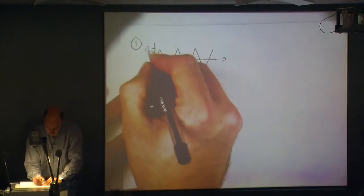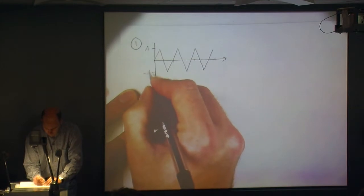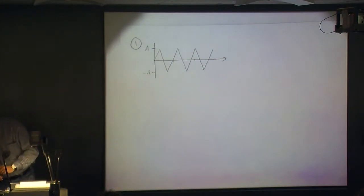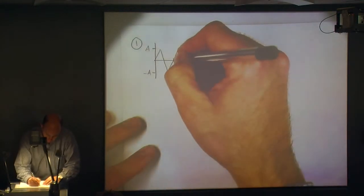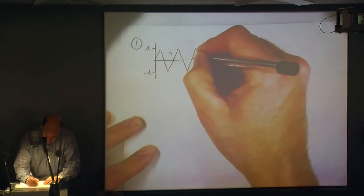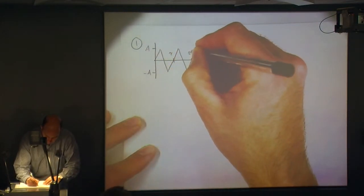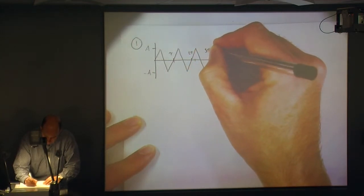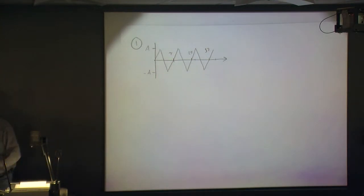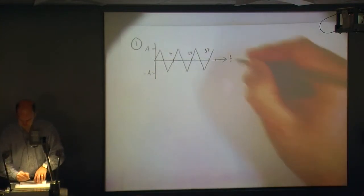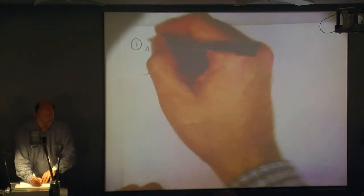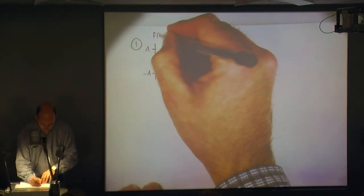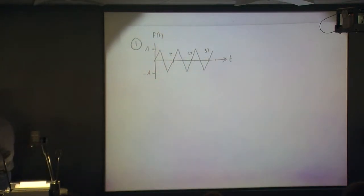This value is a, this value is minus a, and we have a period here of τ. So this is 2τ, this is 3τ, where this is obviously time. This is my forcing function f. That's just reproducing what's in the notes.